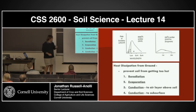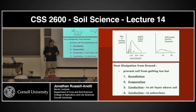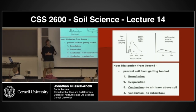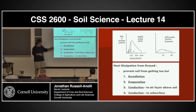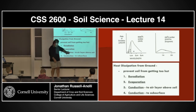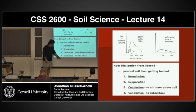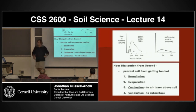Once that energy actually hits the ground, what happens to it? Basically, there are four things — preventing the soil from getting too hot, or in fact letting the soil get hot. There's re-radiation, evaporation, conduction from that material to the air layer above, or from that soil, and conductance from that surface to the subsurface. So let's go through all four of these.